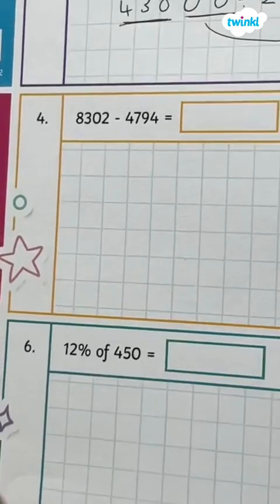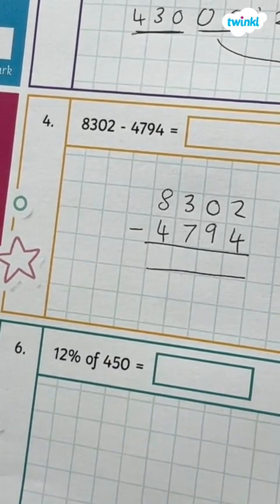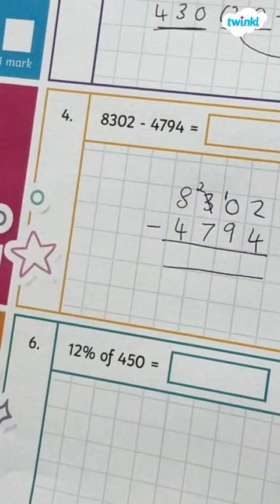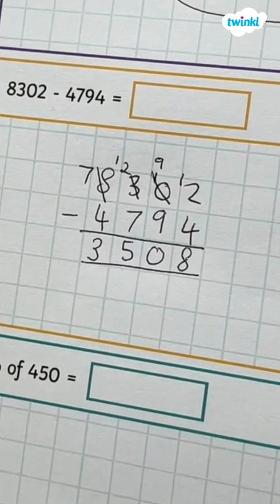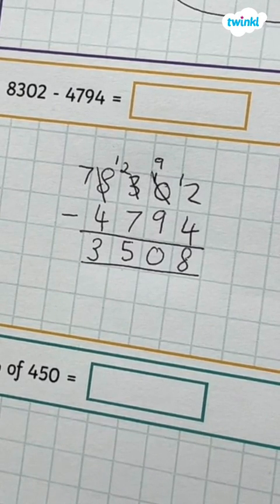Question 4 needs a subtraction written method. You can't do 2 take away 4 so you're going to have to regroup from the next column. But that's a zero so you need to regroup twice from the 100 column. And then you can do 12 take away 4, 9 take away 9, 12 take away 7 and 7 take away 4.